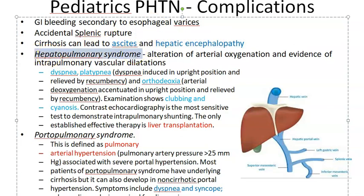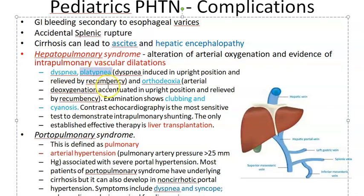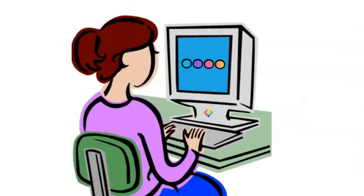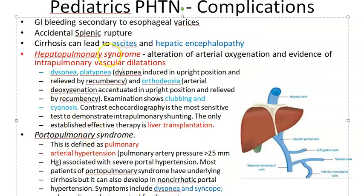There is also hepatopulmonary syndrome, where there is intrapulmonary vascular dilatation — the blood vessels in the lung are dilated — causing altered arterial oxygenation. These patients have dyspnea and platypnea, which is dyspnea induced in the upright position. Orthodeoxia means arterial deoxygenation accentuated in the upright position — oxygen levels drop when sitting upright.